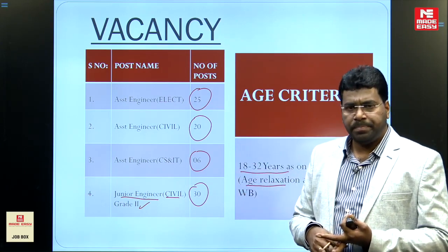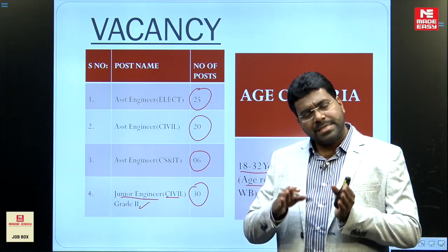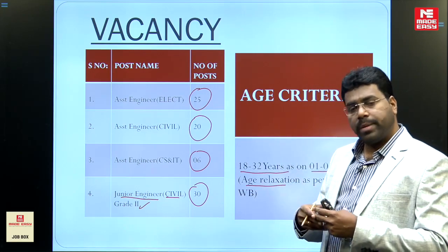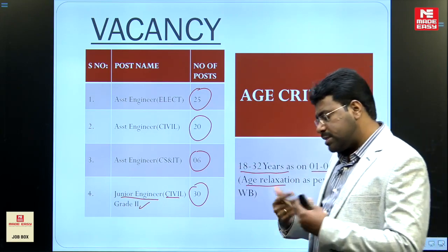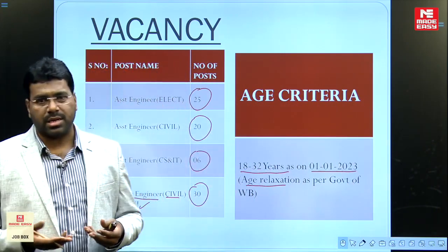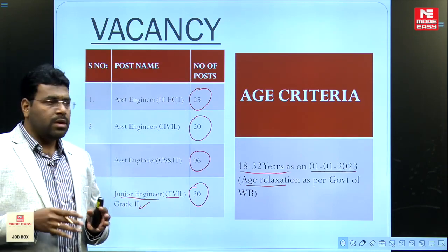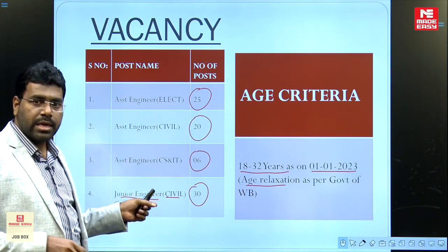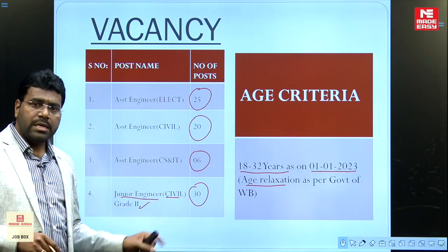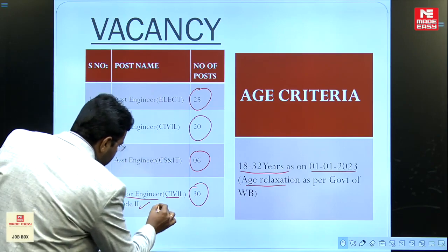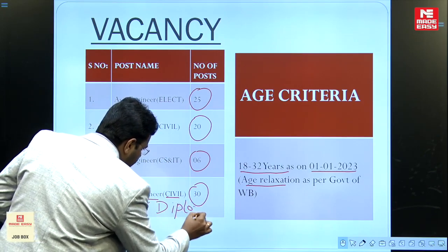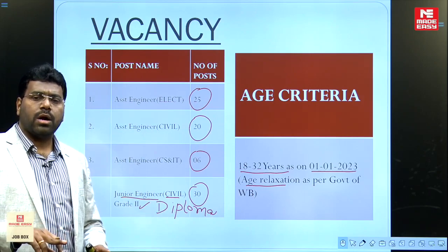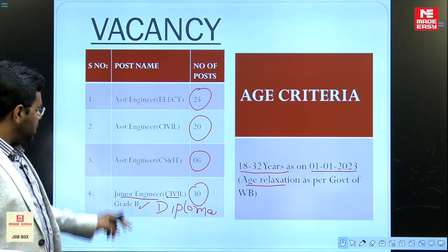60 percent is the general cutoff, and selection is based on the GATE syllabus — technical paper according to the GATE syllabus. For Junior Engineer Grade 2, a diploma is required as the minimum qualification; however, B.E. or B.Tech holders can also apply.